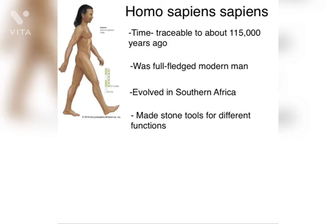The final stage in evolution is Homo sapiens sapiens. Their evolution is traceable to about 1500 years back. This was the full-fledged modern man as we are today. They evolved in the southern part of present-day Africa and made stone tools for different uses and different functions.